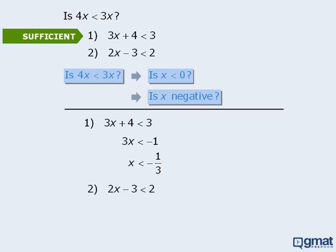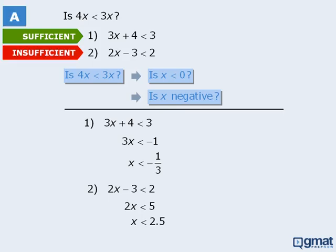On to statement 2. Here we'll isolate x by adding 3 to both sides and then dividing both sides by 2, to get x is less than 2.5. Does this provide sufficient information to answer one of our new target questions? No — if x is less than 2.5, x could be negative, but it could also be positive. So statement 2 is insufficient, which means our answer is A.